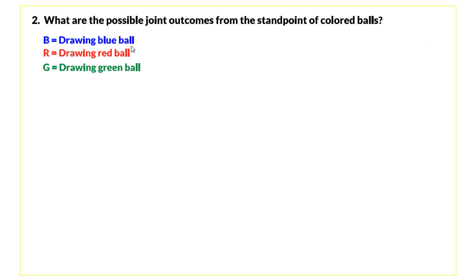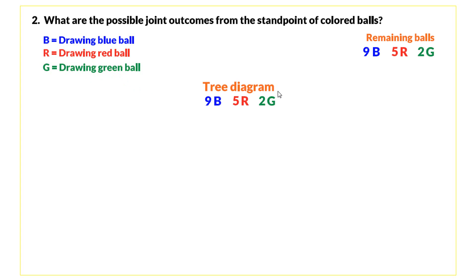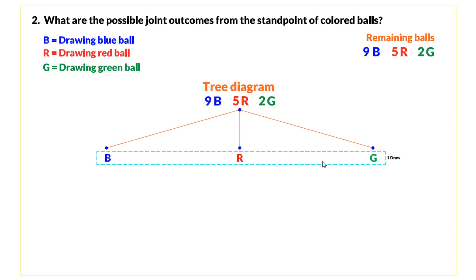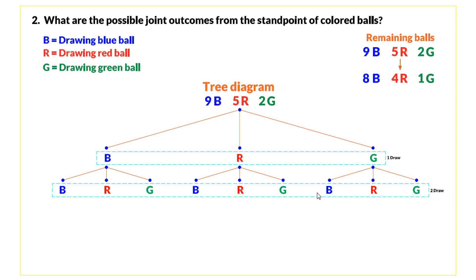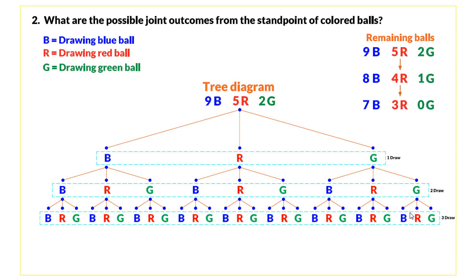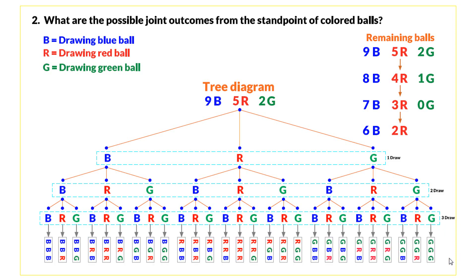Question two: what are the possible joint outcomes from the standpoint of colored balls? Let B represent drawing a blue ball, R a red ball, and G a green ball. We draw a tree diagram starting with nine blue, five red, and two green. After the first draw we may get blue, red, or green, leaving eight blue, four red, and one green. In the second draw we again may get blue, red, or green, leaving seven blue, three red, and no green. In the third draw we may only pick blue or red, since there are zero green balls remaining.